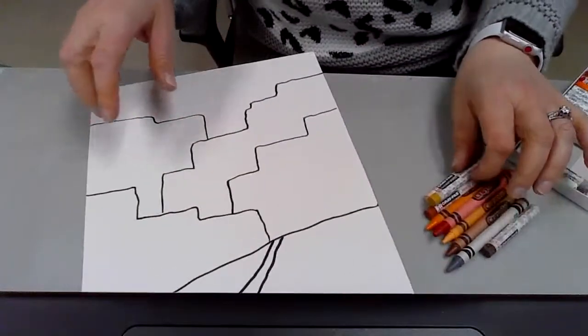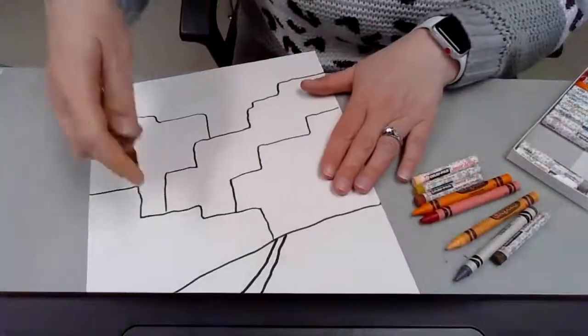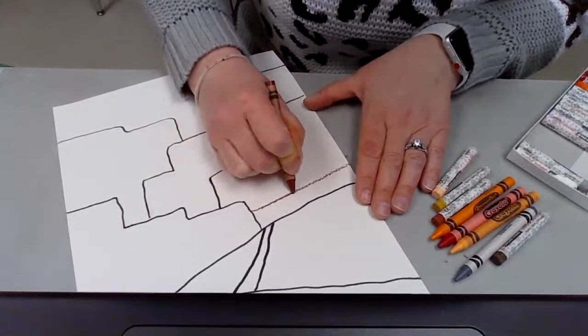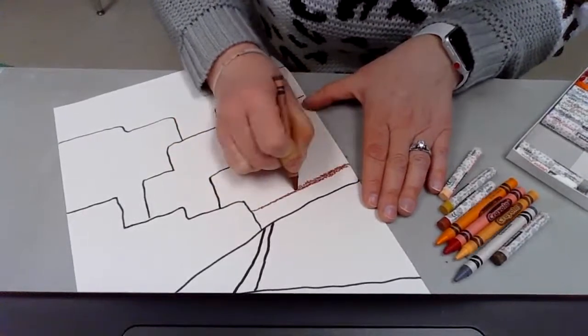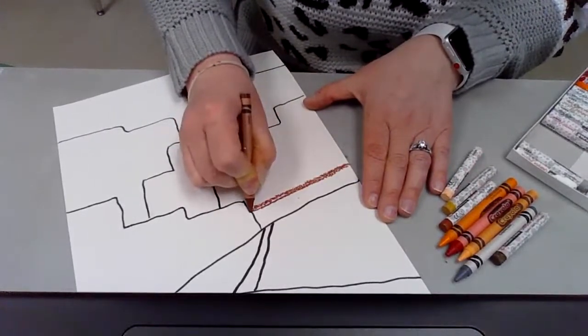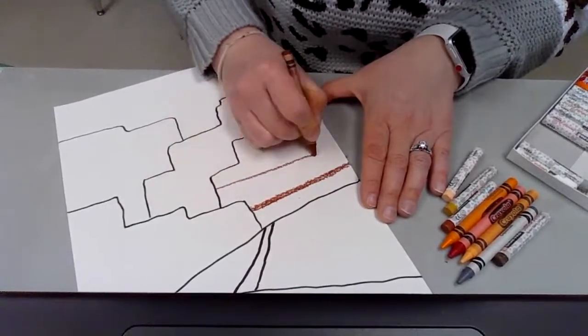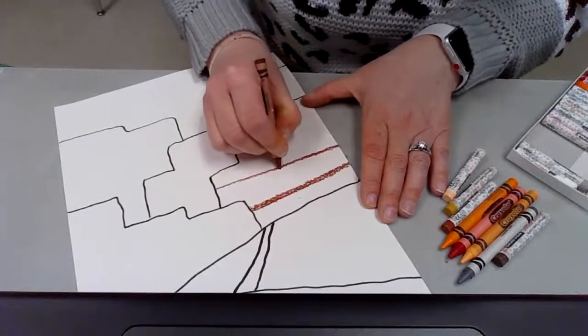But what you're going to do is if you're using crayons or colored pencils, you're going to start creating some horizontal strips of color. Now, I encourage you to press pretty hard when you do this. And I also encourage you to have different thicknesses.